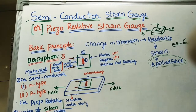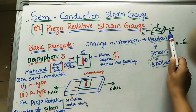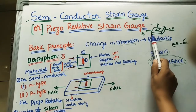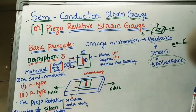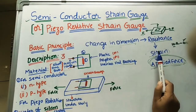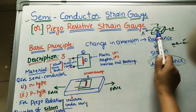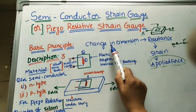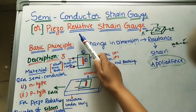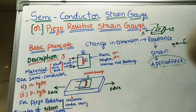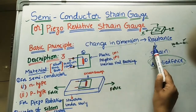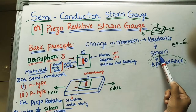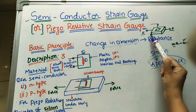Let us take the basic principle. Whenever we apply forces on a given structure, it gets strain — meaning its dimensions change. Because of the change in dimensions of the structure, whatever strain gauge we have pasted on it also gets strain, changing in dimension — either the semiconductor or piezo-electric crystal material. This change in dimension will also change the resistance of that material, and the change in resistance will measure the strain or applied forces.